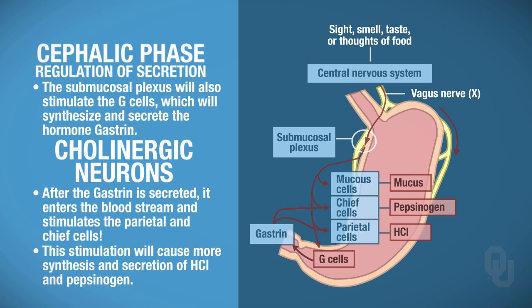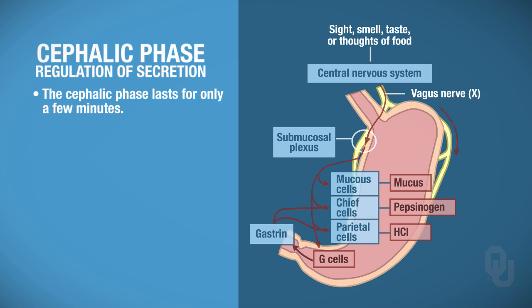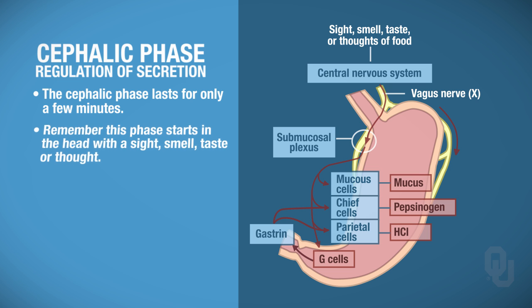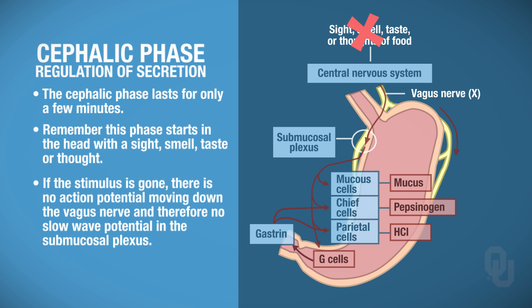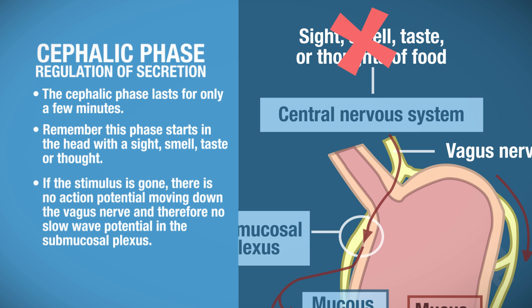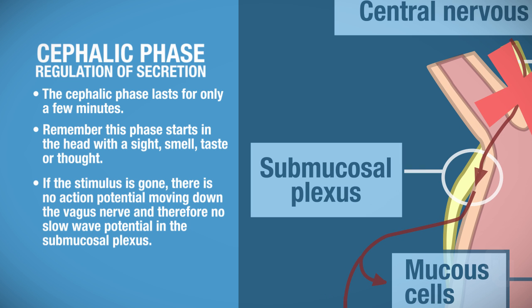This phase does not last very long—literally minutes. Remember, it's the cephalic phase; the stimulus originates in the head with the sight, smell, taste, or thought of eating. So what turns it off? To turn off the cephalic phase, remove the stimulus. If the stimulus is gone, there's no action potential traveling down the vagus nerve, and therefore you won't create a slow wave potential in the submucosal plexus.